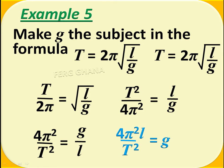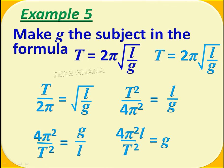Now, making g the subject, l which is dividing must now move to multiply the 4π². So our g now equals 4π²l/T², or 4π²l/T² = g.